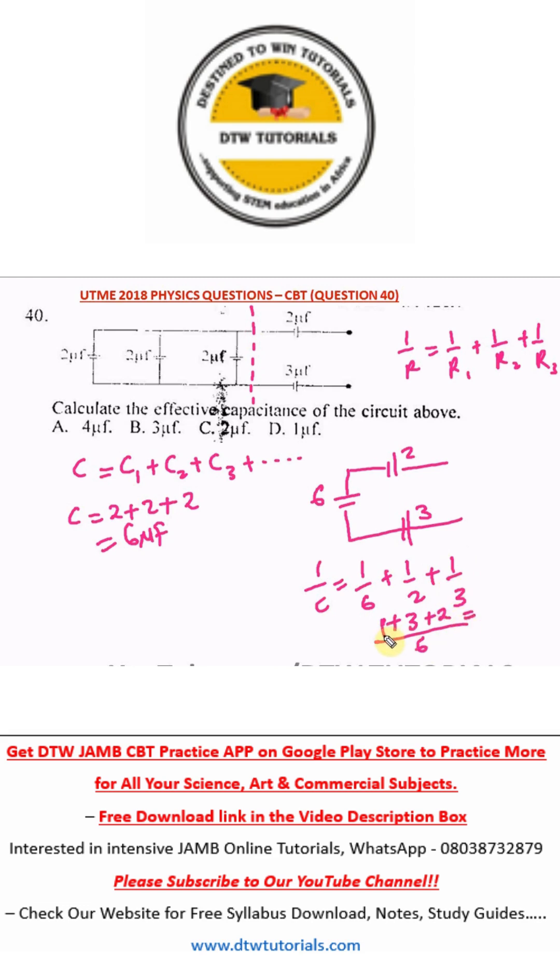When we add this up, we have 1 plus 3 is 4, and 4 plus 2 is 6. So we have 6 over 6, and 6 over 6 gives us 1. So C is equal to 1 when you invert, it's still 1. So C equals 1 microfarad.